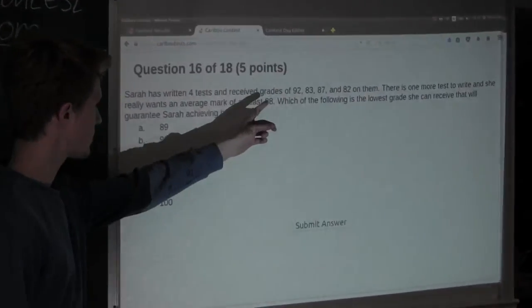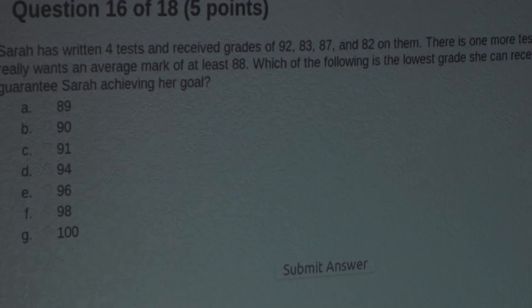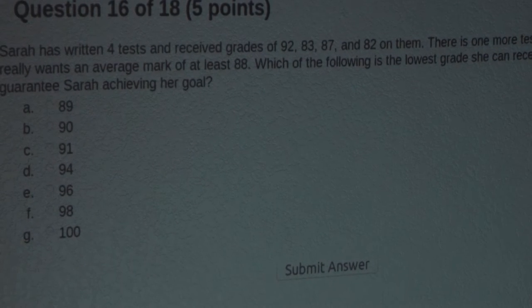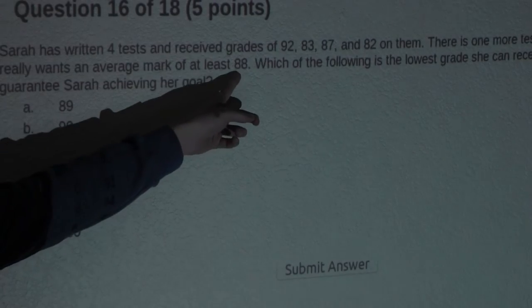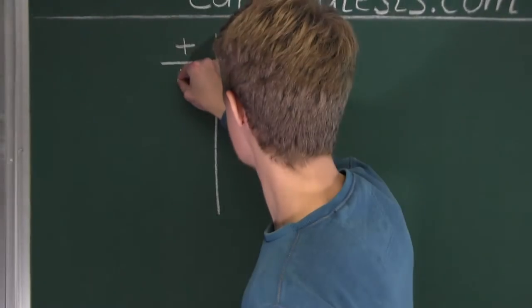Let's look at the first grade. She got 92 on her first test, and 92 minus 88, her intended average, is plus 4. So we have 4 here.